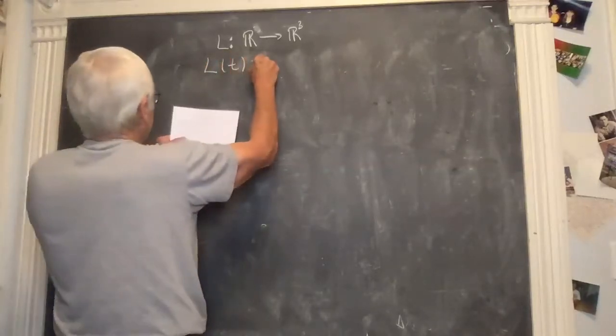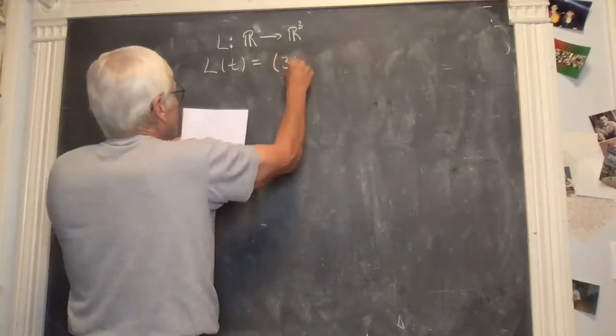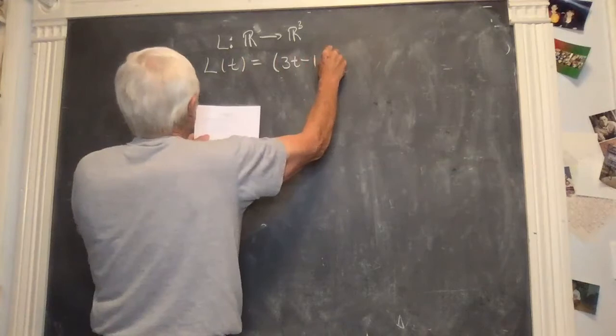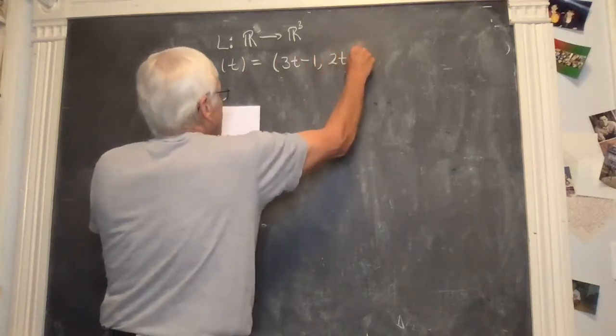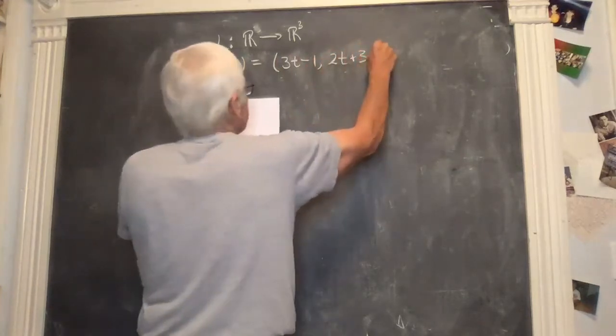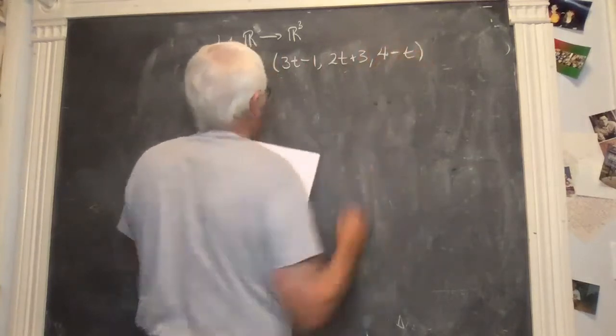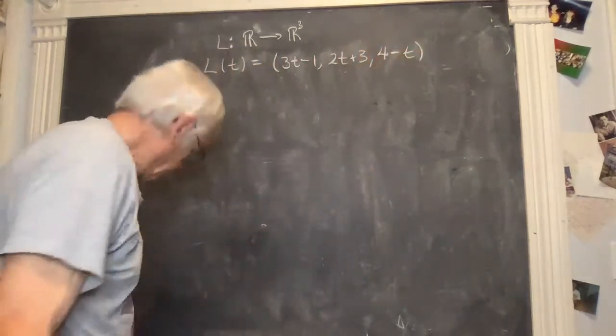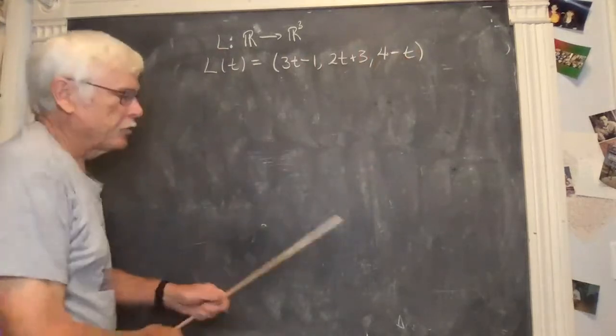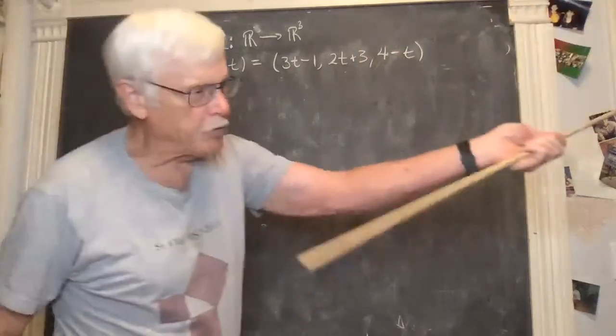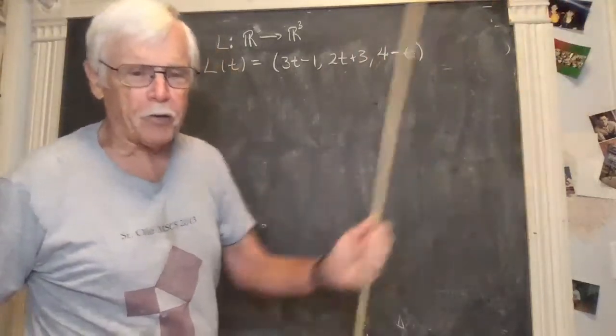L of t, it's a line, so it only has one variable, t, the parametric variable. This equation takes the real number line and places it somewhere in three-dimensional space.